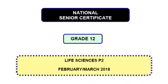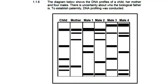Our next question comes from February-March 2018. Here we have the DNA profiles of a child and her mother, and four possible males. There is uncertainty about the biological father, and DNA profiling was conducted to establish paternity. Let's do the same thing - we identify mom's bands, and as you can see, one of mom's bands is definitely in the child. All bands that are not accounted for by the mother need to be accounted for by the father, because an offspring gets DNA from either mom or dad - there's no other option.